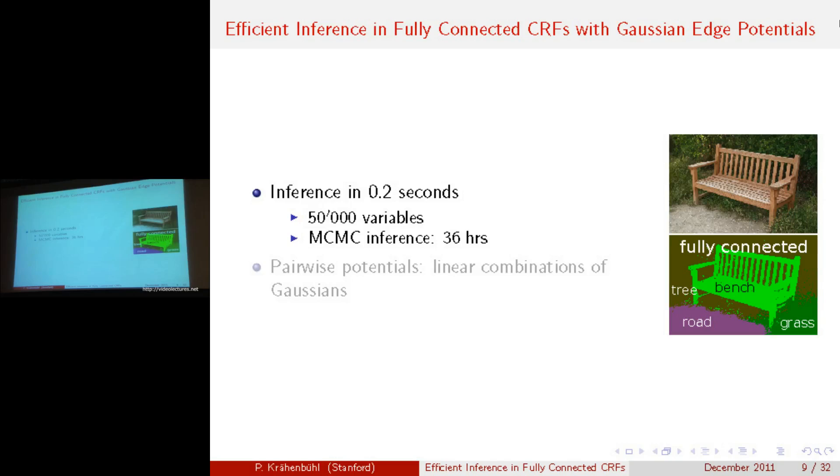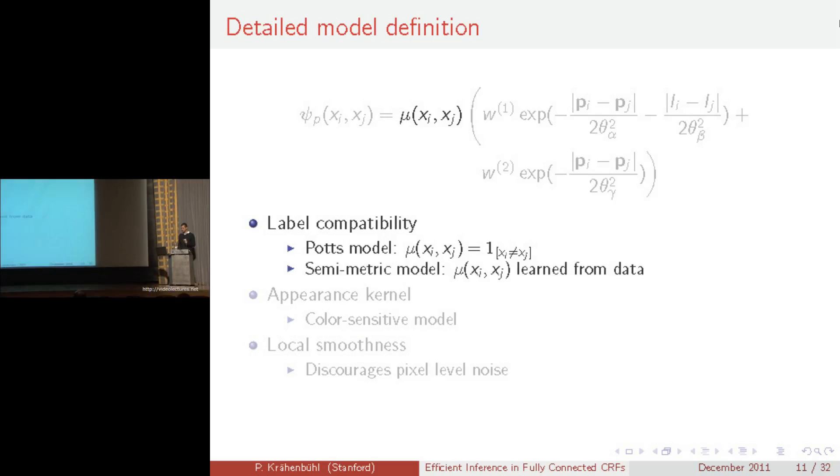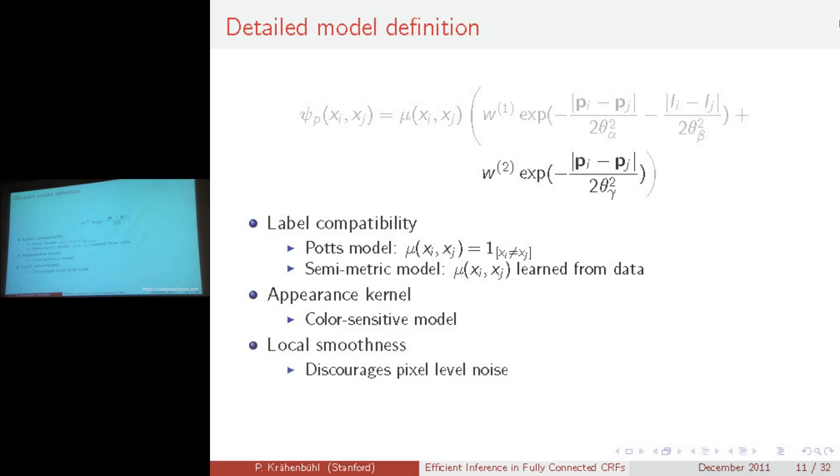To be a little more concrete, the model we use in all our experiments is a two-kernel model, where the label compatibility function is either a simple Potts model or is learned as a semi-metric function from data. The first kernel in our model is a simple appearance kernel, which expresses our belief that close-by objects with a similar color should have the same label, and it's a direct extension of the color-sensitive Potts model I showed you earlier in those slides. The second kernel is just a local smoothness kernel, which discourages single-pixel noise.